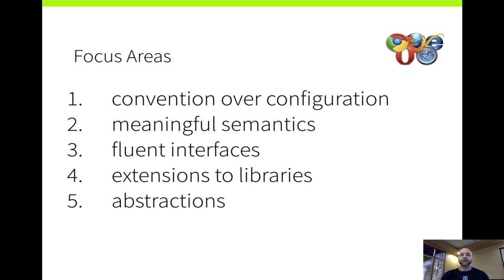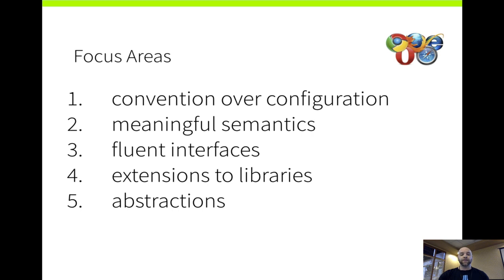We're going to cover five areas in this talk as focus areas for those benefits. First is the idea of convention over configuration, as popularized by Ruby on Rails. Second is meaningful semantics — the idea that what we write should have meaning, optimizing for readability instead of writing, since we read a lot more code as developers than we write. Third is fluent interfaces. Fourth is extensions to libraries — the open-closed principle: open to extension, closed to modification. And fifth is the general concept of abstractions in the browser with JavaScript and CoffeeScript.